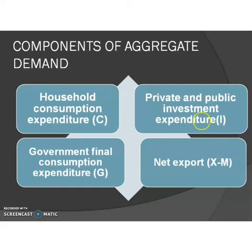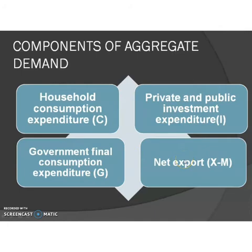The third component is government final consumption expenditure, which comprises the ex-ante expenditure by the government. The last component is net export — that is, the difference between exports and imports. Planned net export is part of aggregate demand.